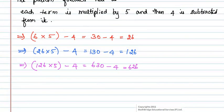Then, 626 is multiplied by 5 and 4 is subtracted from it. We will get 3130 minus 4 which is equal to 3126.